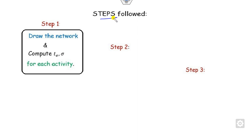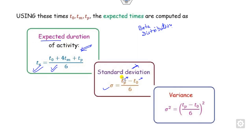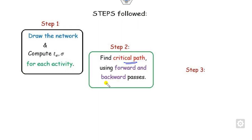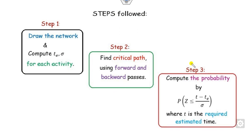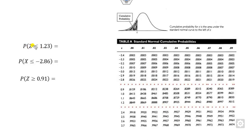We will discuss solving these problems using a three-step rule. The first step is to draw the network and compute Te and sigma using the formula. After completing the network, we find the critical path using forward and backward passes. Finally, we compute the probabilities, where Te is the expected value computed earlier and small t is the required target time we need to estimate. To compute the probability, make sure all expressions use the less-than sign since the area starts from minus infinity. You can read these values from the Z-table, available at the end of statistics or operations research books. For example, for Z = 1.23, look up row 1.2 and column 0.03.